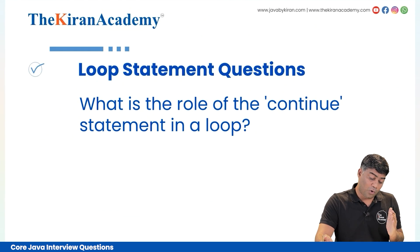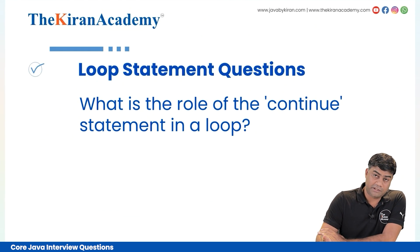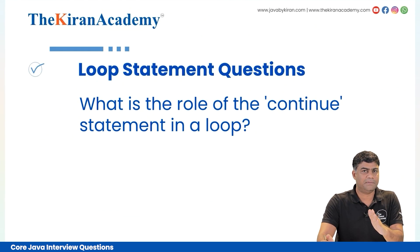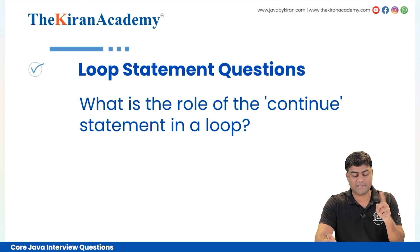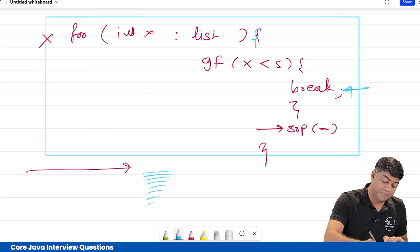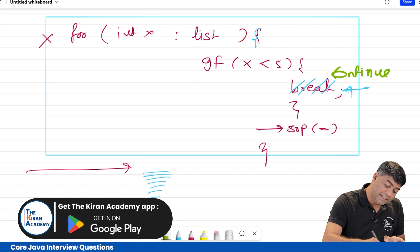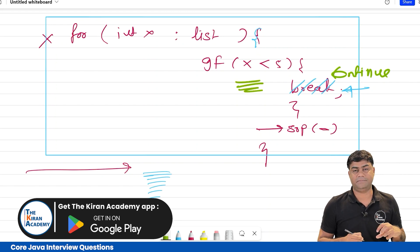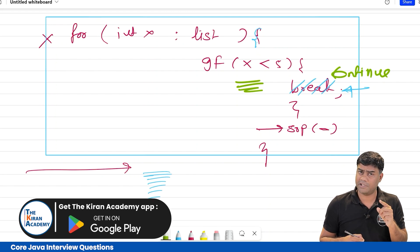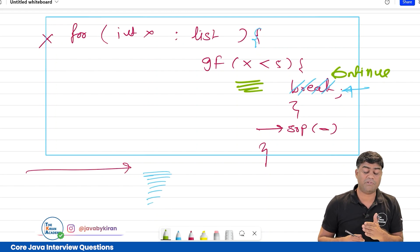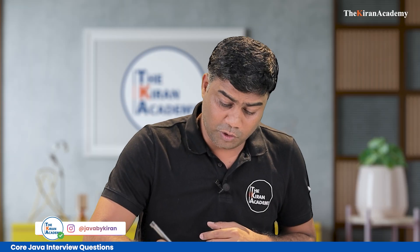Next question: what is the role of the continue statement in the loop? Continue means skip. Break means terminate, continue means skip. If you write continue instead of break, only this part will get skipped. Will the for loop continue or not? Answer is yes, the for loop will continue, but this code execution will be skipped.